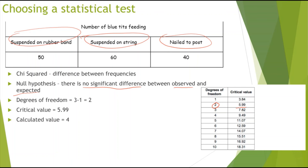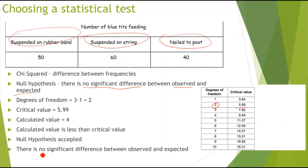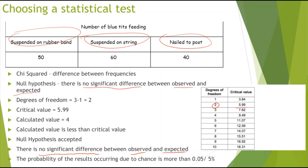With a calculated value of 4, the calculated value is less than the critical value of 5.99, so I can accept the null hypothesis and say that there is no significant difference between the observed and expected. The probability of the results occurring due to chance is more than 0.05 or 5%. Make sure you're using the words probability and results — these are very important.